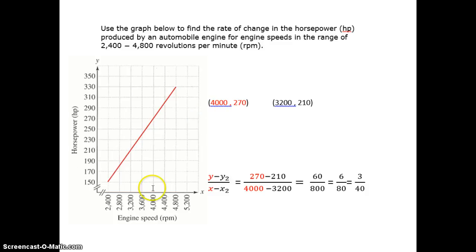The two I picked were 4,000 for the X and 270 for the Y, which is right here, and then 3,200 for the X and 210 for the Y, which is right here.